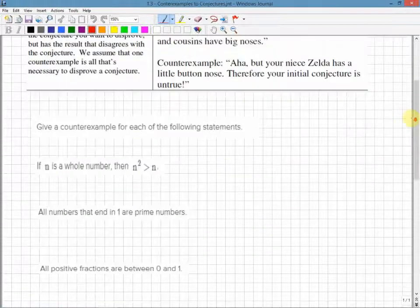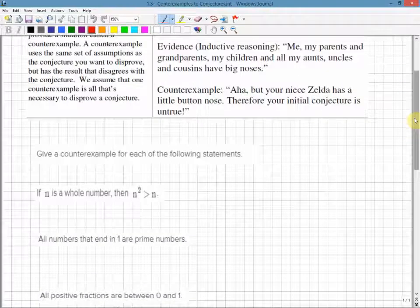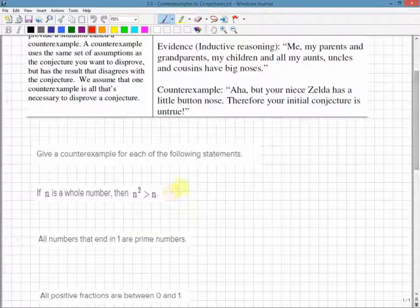Here we have: if n is a whole number, then n² is bigger than n. I can gather a lot of information about this. I could say, here's 4, that's a whole number.